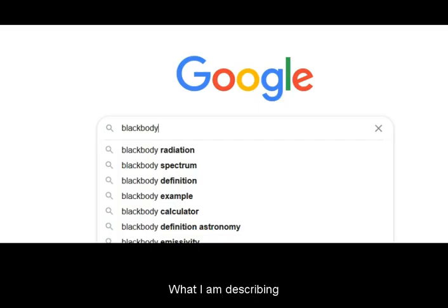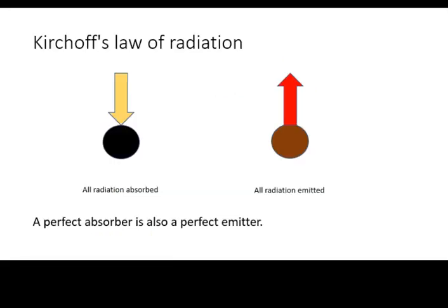What I am describing is known as blackbody radiation. A blackbody is defined as one that absorbs the maximum amount of radiation. It is also the body that emits the most amount of radiation.